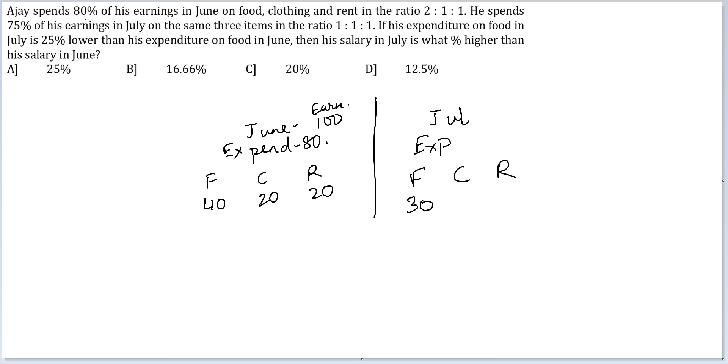Okay. And he has spent it in the ratio 1 is to 1 is to 1. So 30, 30 and 30. So 90 rupees. And 90 rupees is 75% of earnings in July. So his expenditure is 90 and this is 75% of his earnings. So this earnings in July will be 120.